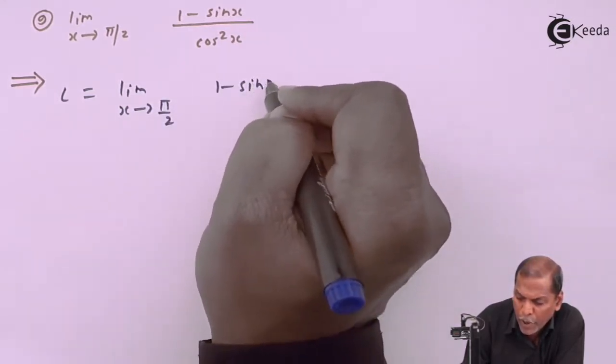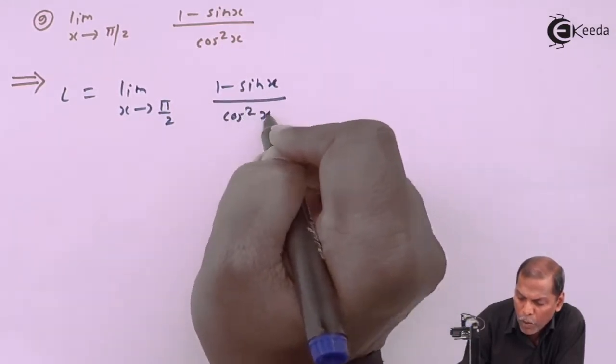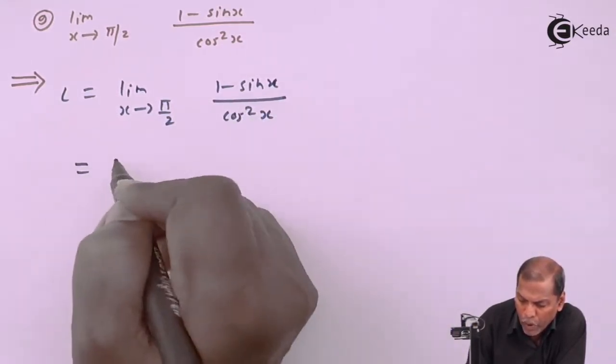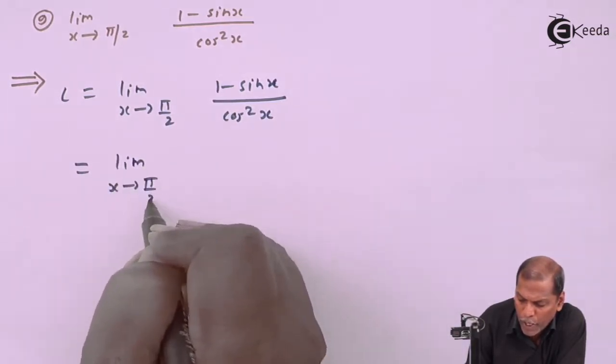That equals the limit as x tends to π/2 of (1 - sin x)/(cos²x).